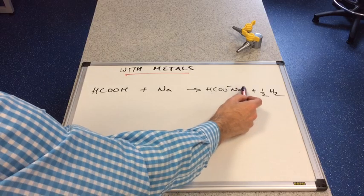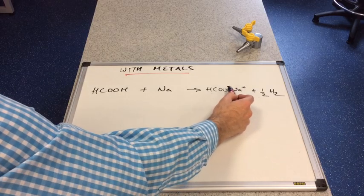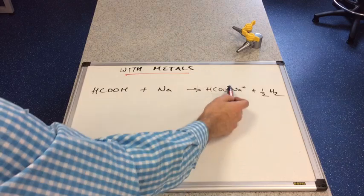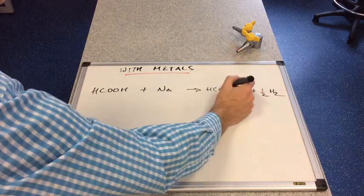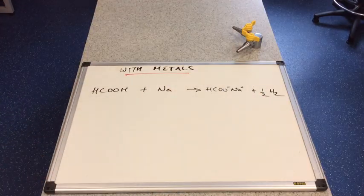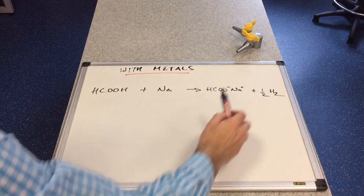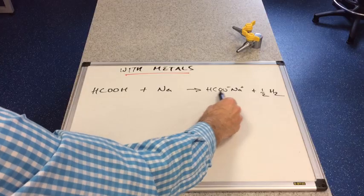Now I've deliberately shown the charges there. Sometimes you'll see the charges shown in the salt. Sometimes you don't. So be familiar with both ways. I'll leave them in. So that salt will be called sodium methanoate.